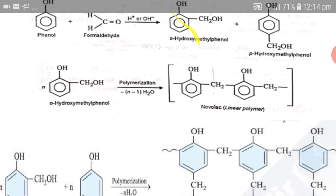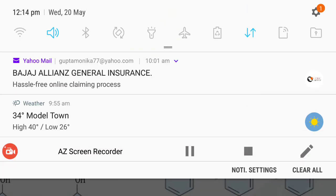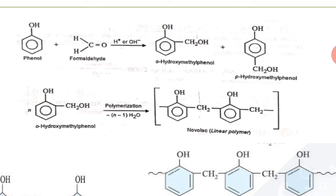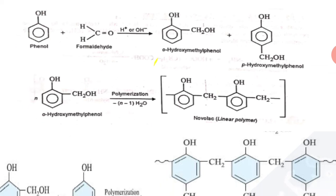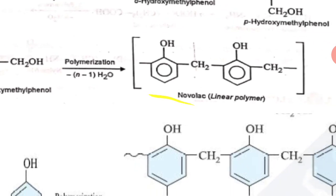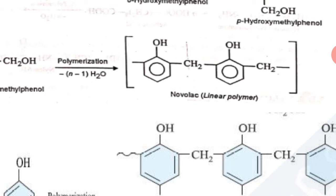Now let's see how it is made. Phenol and formaldehyde are reacted in acidic and basic medium. The -CH₂OH group attaches at the ortho and para positions. If you combine N units only at the ortho position, polymerization gives a linear polymer — this is Novolac.